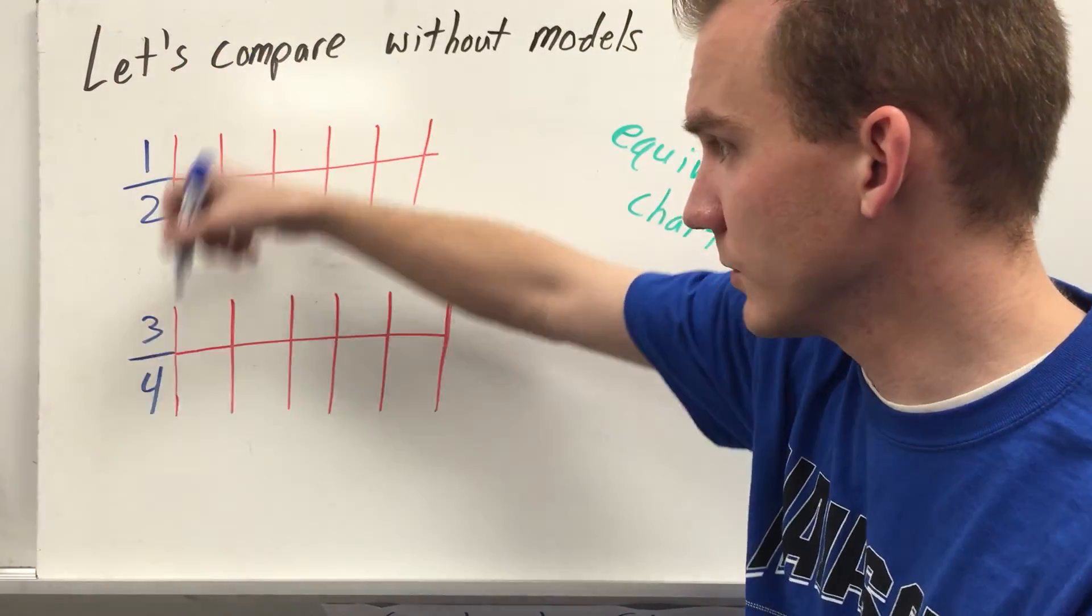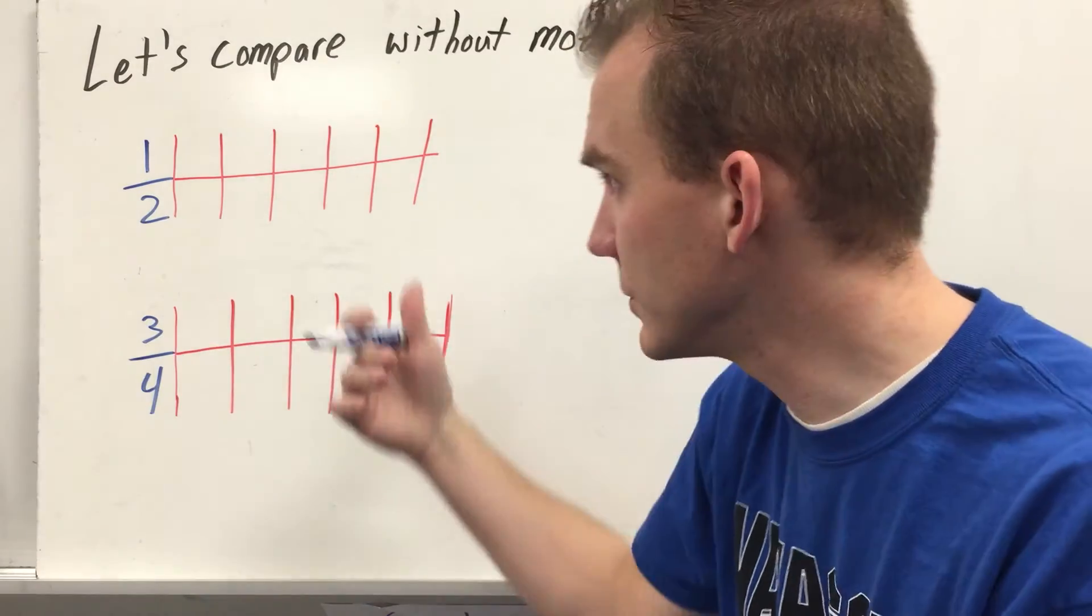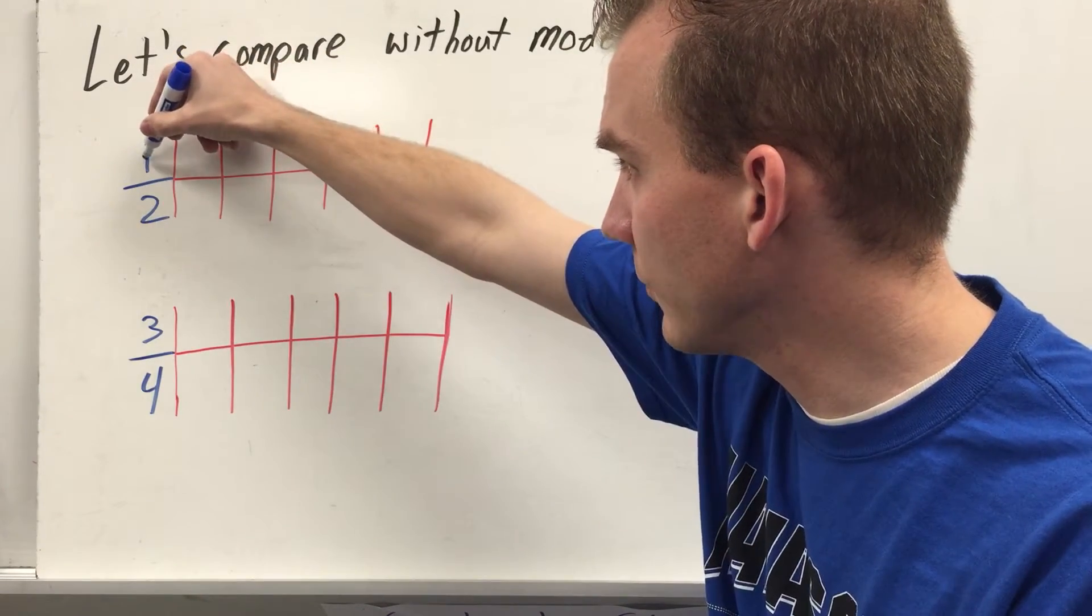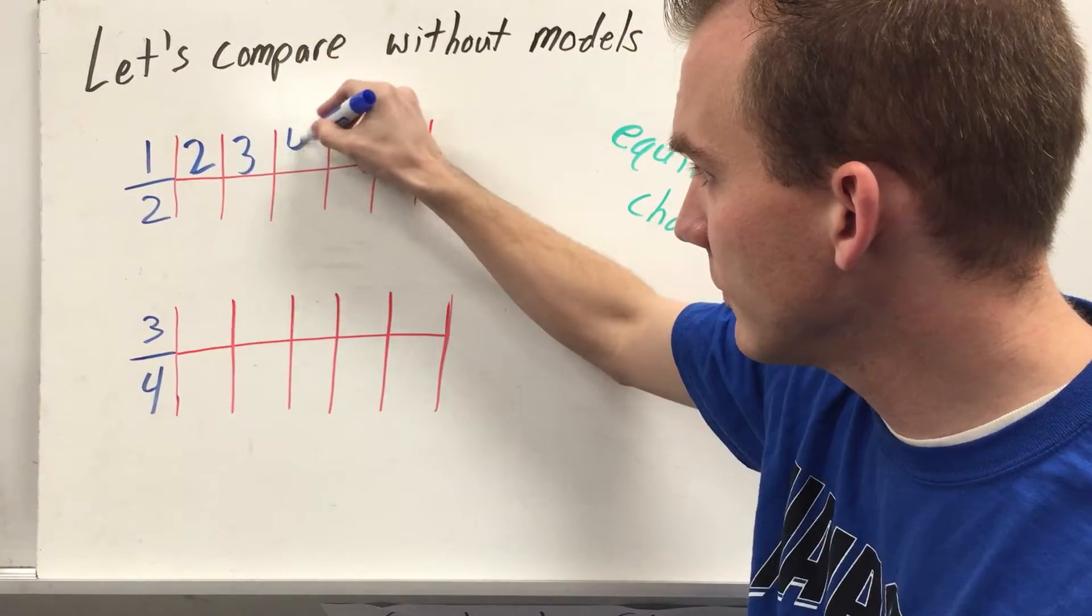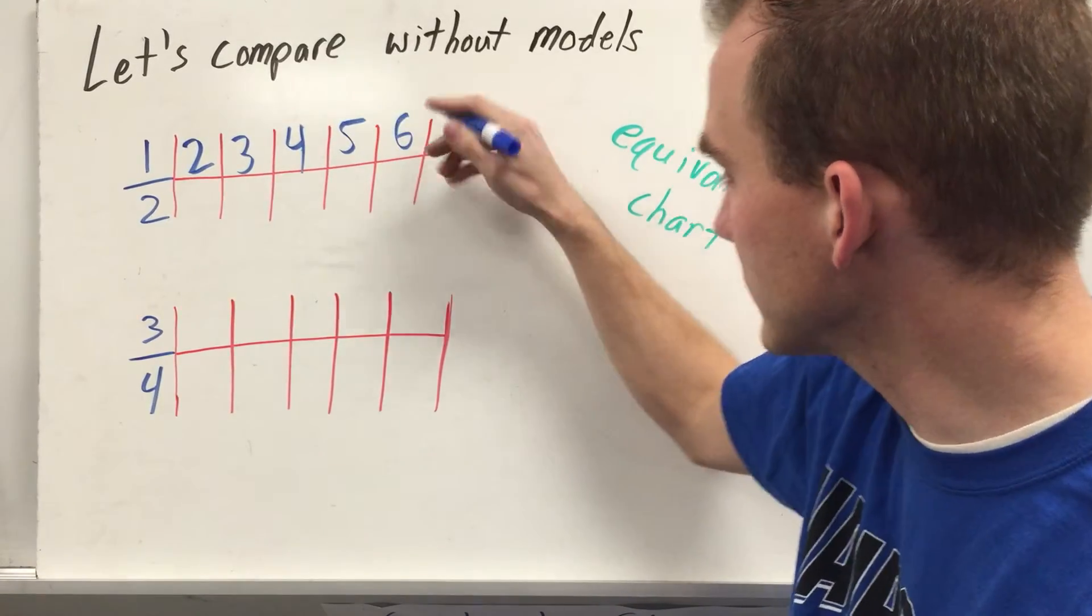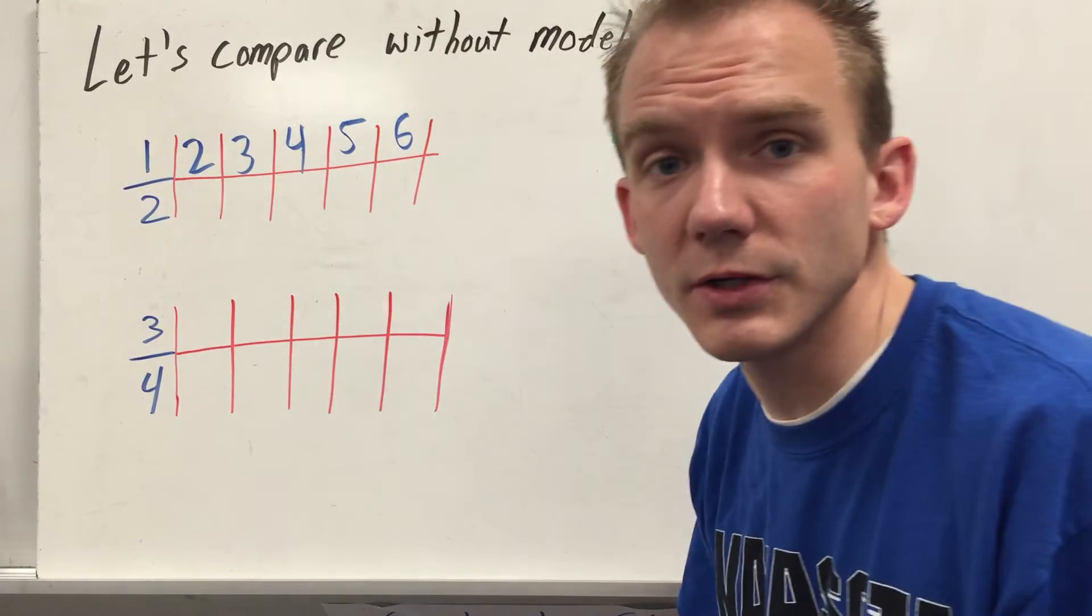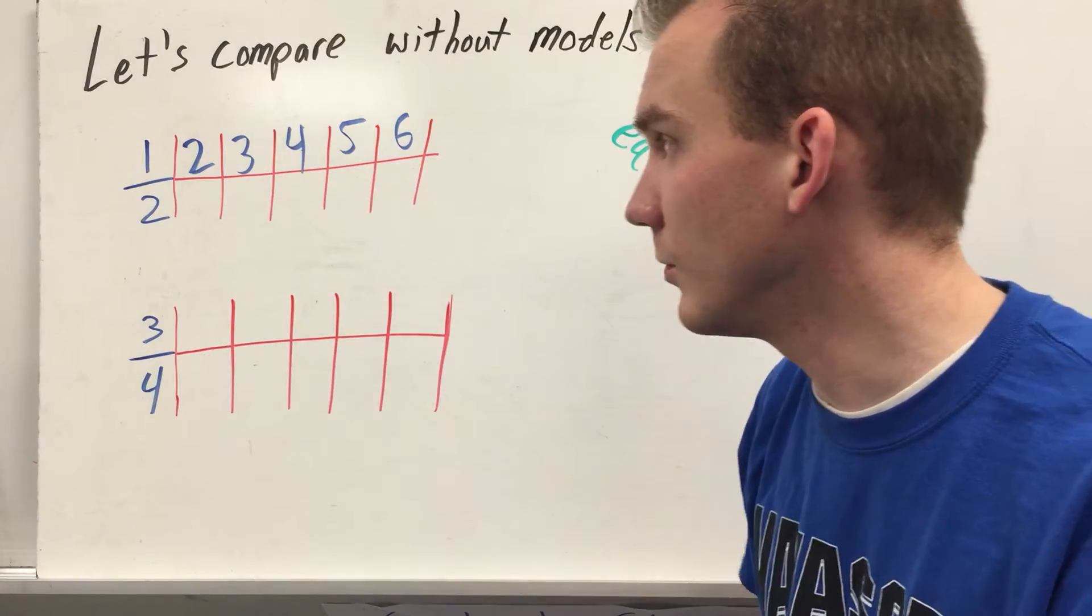So for 1 half and 3 fourths, we're going to compare them again. We already know which one's greater, but we're going to compare them using the equivalency chart. So you do 1 half. So you have 1, 1 times 2 is 2, 3, 4. You're just basically counting by that number. 5, 6. And you could go on all the way up as far as you need to. What you're looking for is to find an equivalent fraction that has the same denominator as the one below.